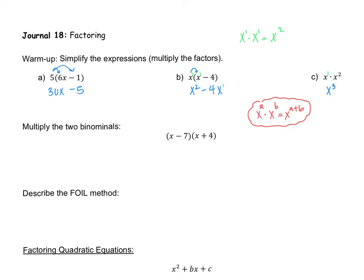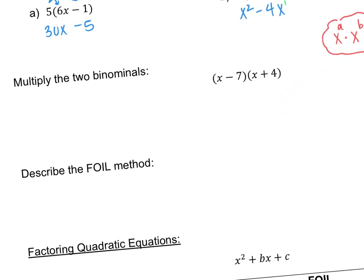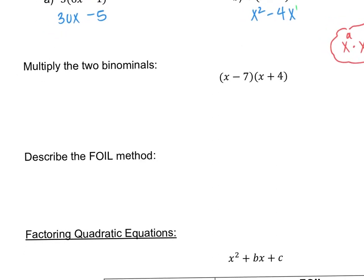We're going to multiply these two binomials out using a technique called FOIL, which you may have learned in Algebra 1. To multiply two binomials, you take the first term in each set of parentheses and multiply. So x times x is x squared — that's F, which stands for First: multiply the first term in each parenthesis. Next is O for Outer: the outer terms are the x from the first and the 4 from the second. So x times 4 gives positive 4x.